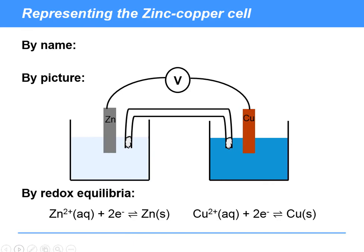So representing the zinc-copper cell, we could represent it by name, just call it the zinc-copper cell. The disadvantage of that is it's ambiguous. We don't know what the oxidation states of zinc and copper are in the cell, and we don't know which half-cell is going to be positive or negative. So we don't want to do that.